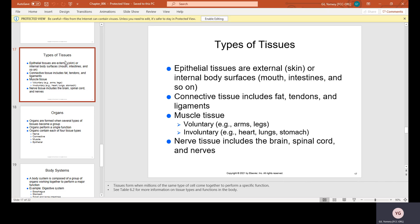Connective tissue includes fat, tendons, and ligaments. Muscle tissue are voluntary, like the ones in the arms and the legs, and involuntary, which is heart, lungs, and stomach. Because the heart, the lungs, and the stomach, you can't control them. They do their own thing. And nerve tissue includes the brain, spinal cord, and the nerves.